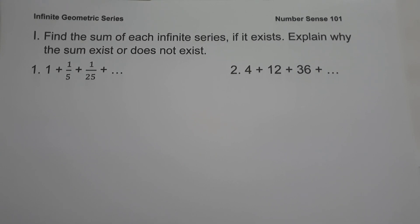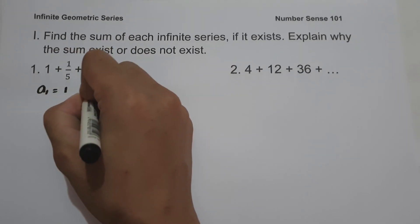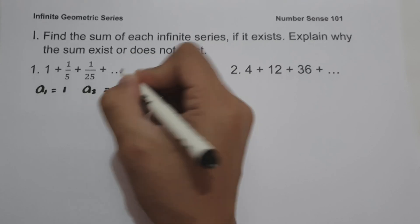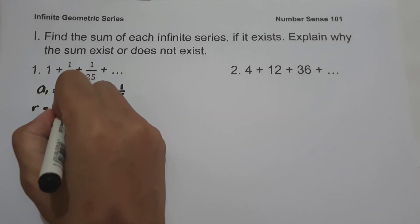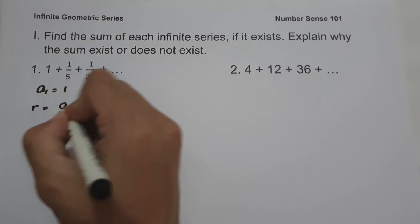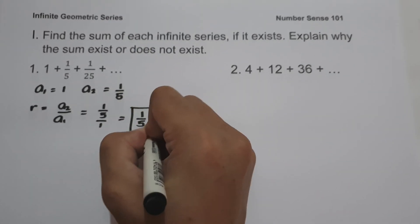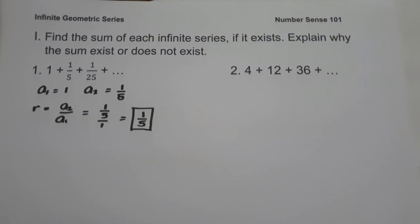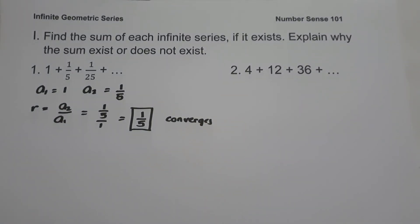On example number 1, we have 1 plus 1/5 plus 1/25 up to infinity. Our first term a sub 1 is 1, and our second term is 1/5. To find the common ratio, we divide the second term by the first term: a sub 2 divided by a sub 1 is 1/5 divided by 1, which equals 1/5. Since our common ratio is less than 1, the series is converged, meaning we can identify the sum.